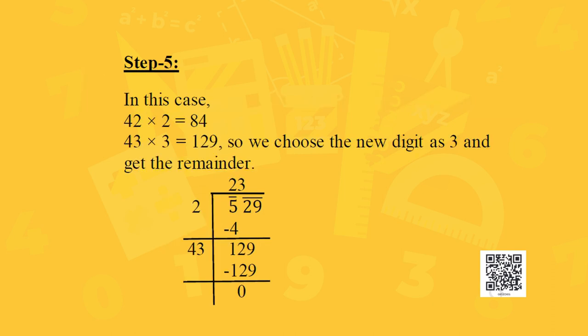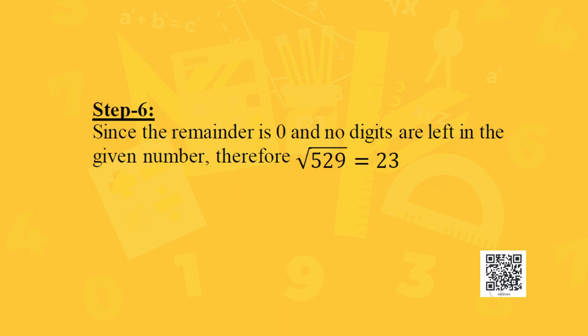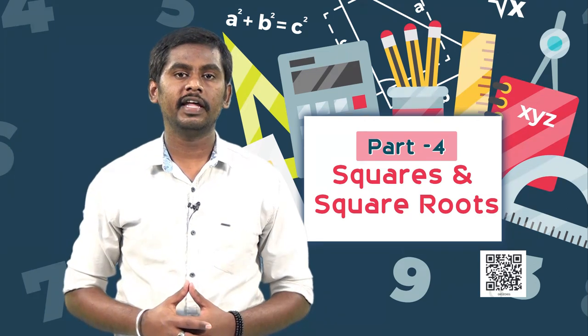In step 5, guess the largest possible digit to fill the blank, which also becomes the new digit in the quotient, such that the new divisor multiplied by the chosen digit is less than or equal to the new dividend. If we fill the blank with 2, we get 42 × 2 = 84. If we fill it with 3, we get 43 × 3 = 129. So we choose 3 and get remainder 0. Since the remainder is 0 and no digits are left, the square root of 529 is equal to 23.